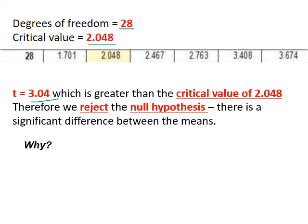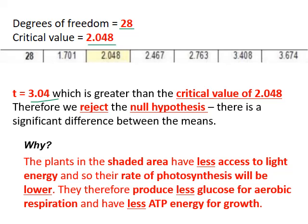In the exam, we may need to explain why there is a significant difference. The shaded leaves have less access to light energy, so their rate of photosynthesis is lower. If the light-dependent reactions do not occur to the same extent, less ATP and less reduced NADP are produced. That means the Calvin cycle in the stroma occurs less, so less glucose is made, leading to less aerobic respiration and less ATP. Since ATP is needed for cell division, less ATP means less cell division, and so the width of the shaded leaves is smaller.